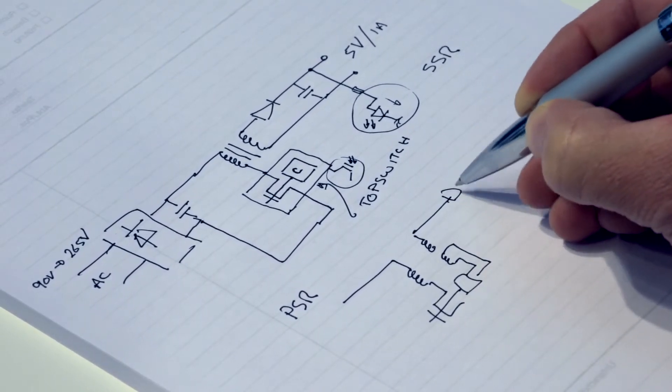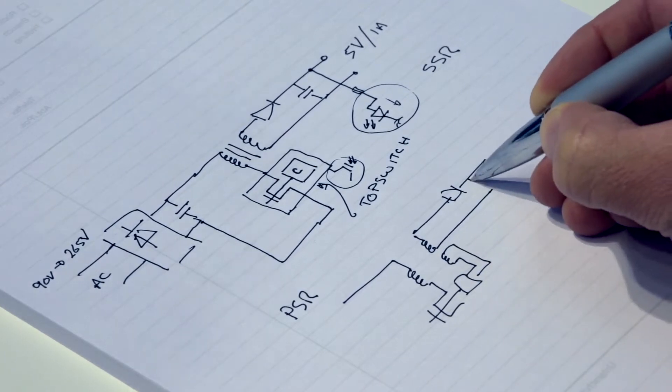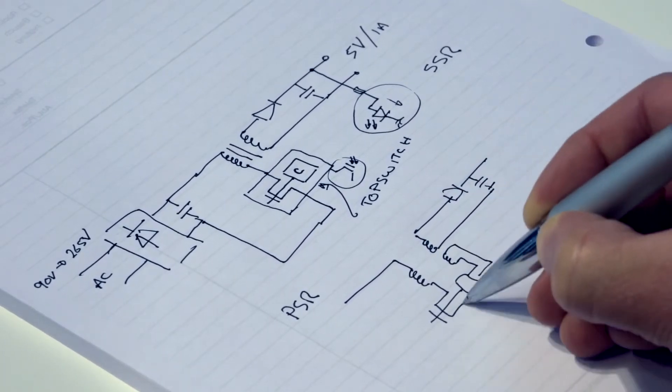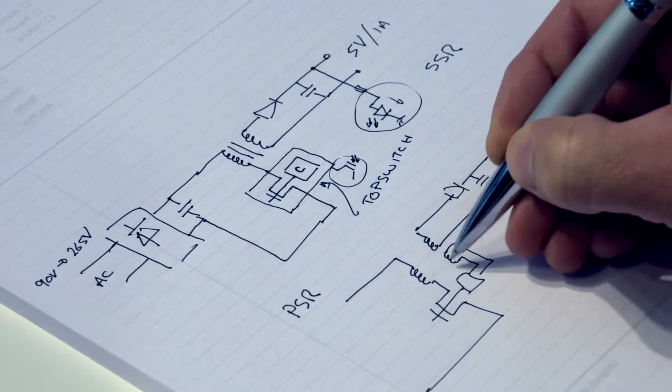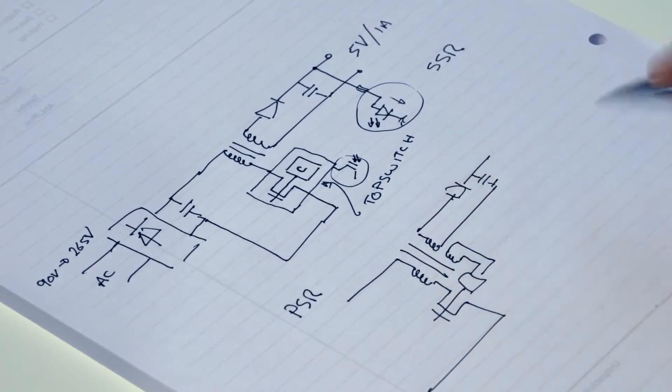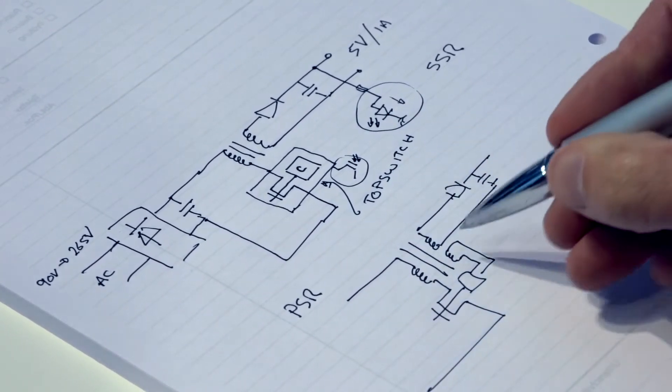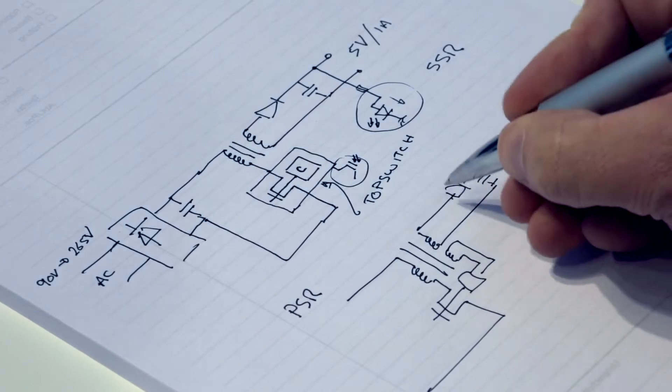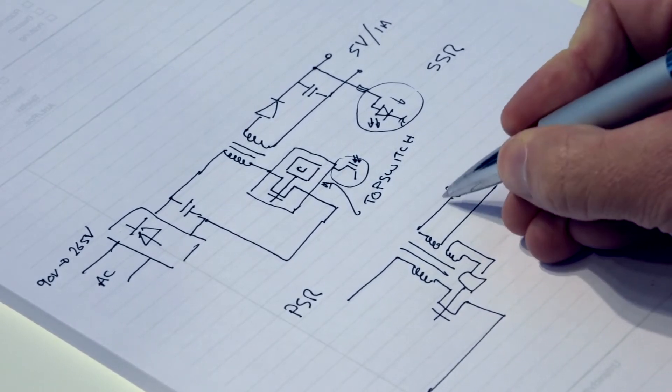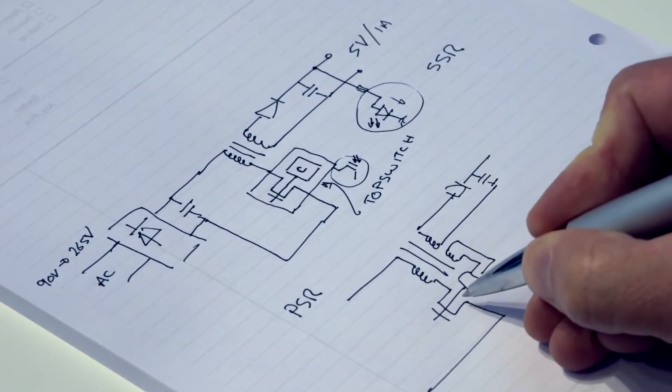So here you have the same isolated secondary side and you have the primary side but you have an extra winding that is coupled by the transformer and what that allows you to do is sense when current is flowing in this circuit and modulate the output.